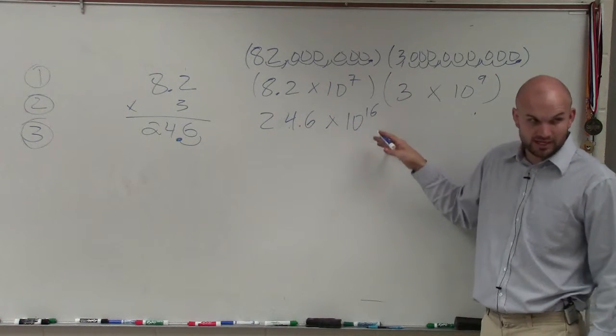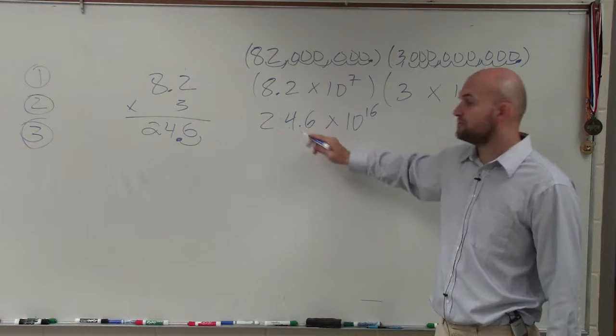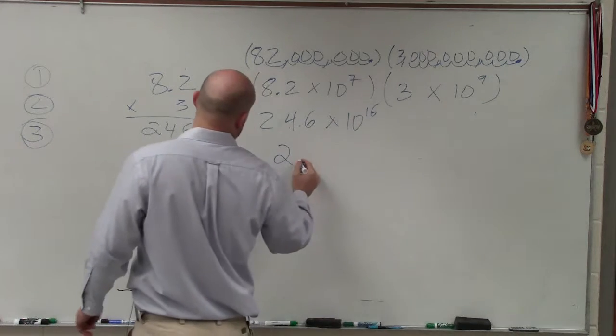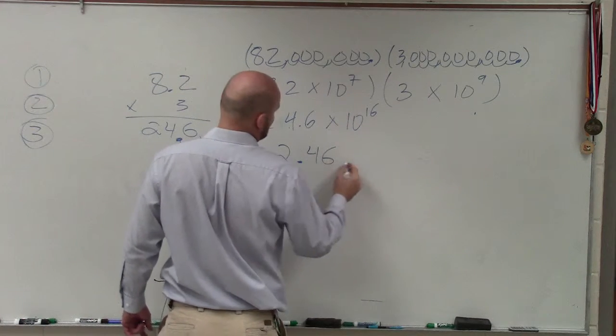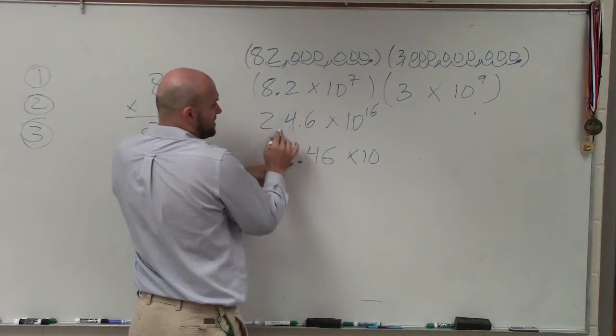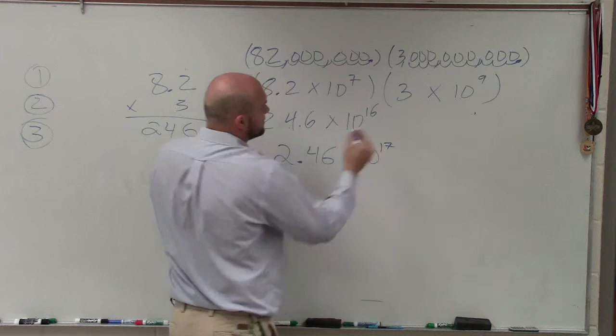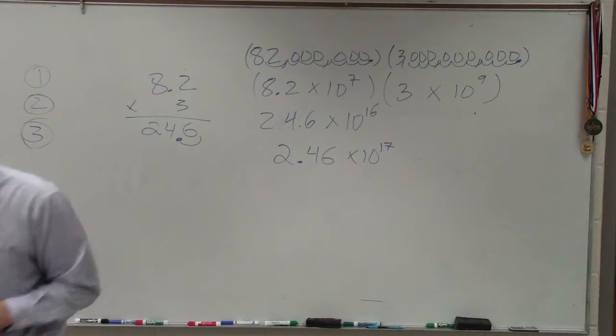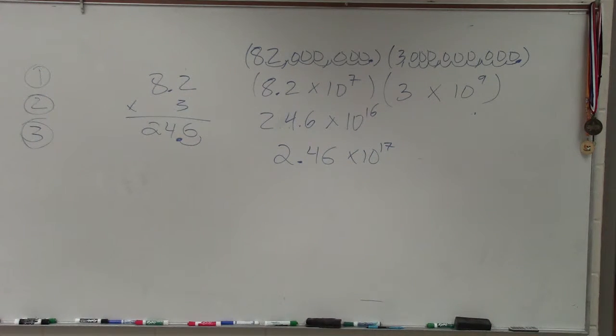Again, that's moving over 16 units. However, we need to rewrite this in proper scientific notation. So I'm going to do 2.46 times 10. Well, from 24.6, I'm moving it over 16. If I start from 2.46, I now have to move it over 17.